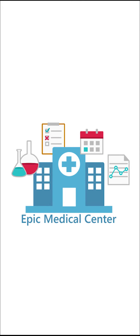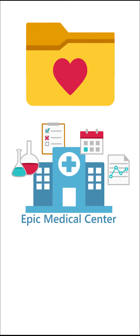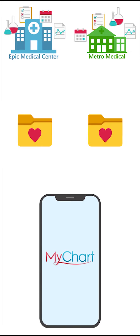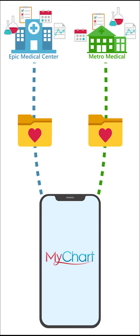Let's say you typically receive care at Epic Medical Center and have a MyChart account there. If you're sent to a specialist at another organization, you'll set up a separate MyChart account with them. But don't fret — you can connect your accounts and switch between them easily from the mobile app or website. I'll show you how from the app.